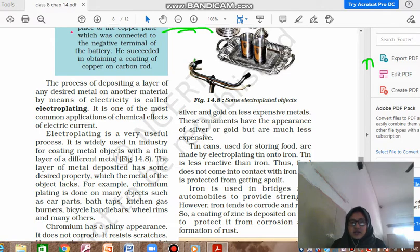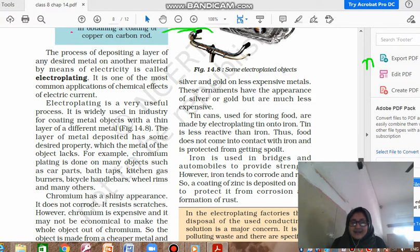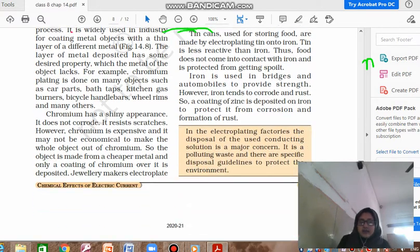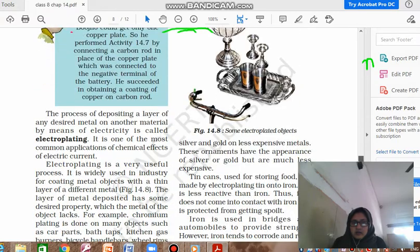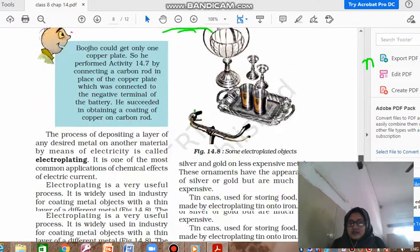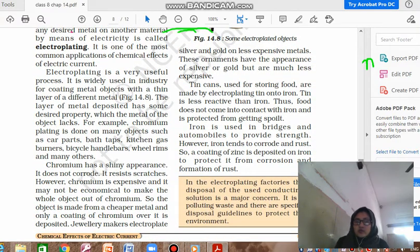For example, chromium plating is done on many objects such as car parts. Chromium is a good metal and it has got desired properties - it's shiny and the rusting is reduced. Therefore chromium is plated on car parts, bathtubs, kitchen glass. But after some time, because of scratching and all, it gets removed. Chromium has a shiny appearance, it does not corrode, it resists scratches also. But chromium is expensive. You cannot make the whole object, but what you can do is coat a cheaper metal. They have shown you some electroplated objects - these utensils are also electroplated. Then tin cans which are used for storing foods are also made by electroplating tin onto iron.